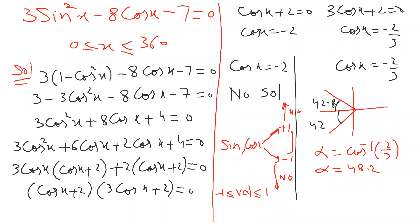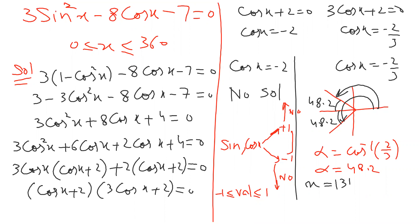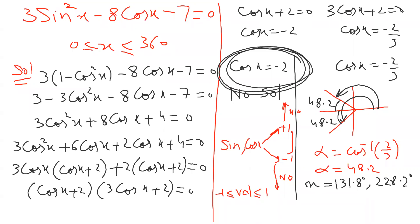Last part: cosine is negative — alpha equals cosine inverse of 2 by 3. Cosine is positive in first and fourth, but negative in second and third. Calculator gives 48.2 degrees. So first answer: 180 minus 48.2 equals 131.8 degrees. Second answer: 180 plus 48.2 equals 228.2 degrees. Important new concept: if cosine or sine value goes above plus one or below minus one, there is no answer — the value must stay between minus one and plus one.